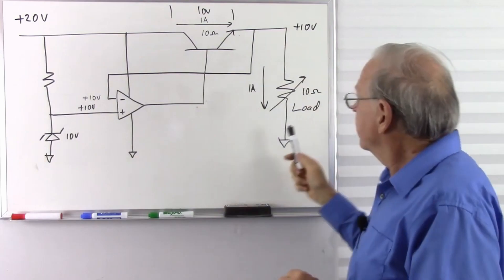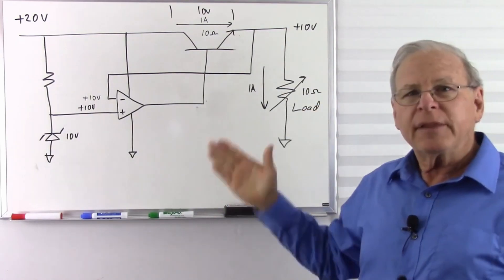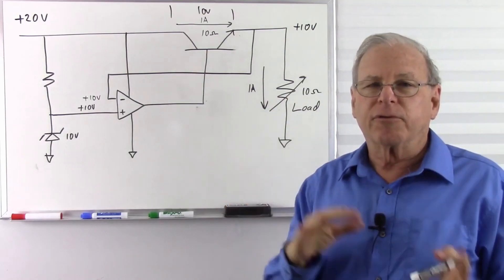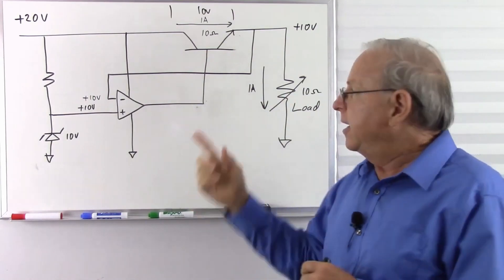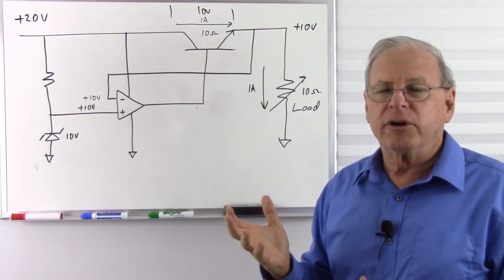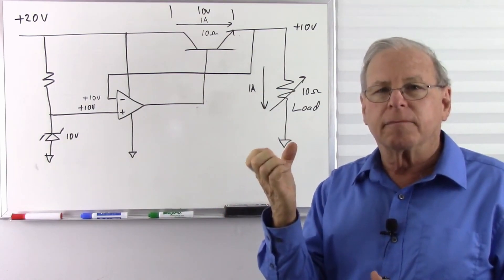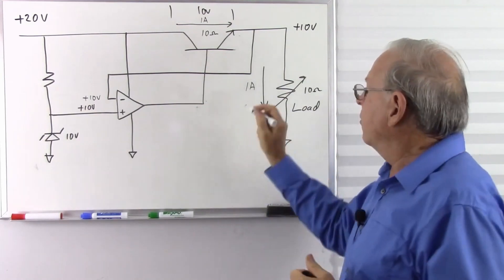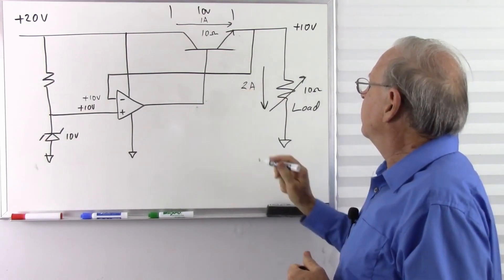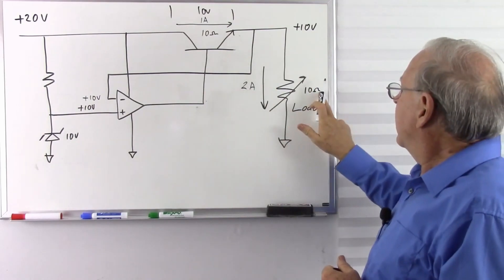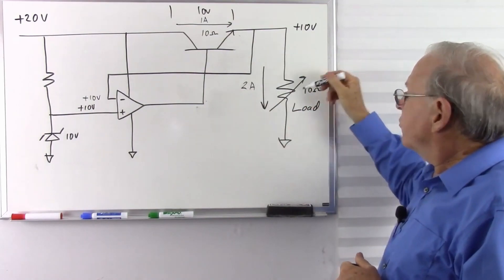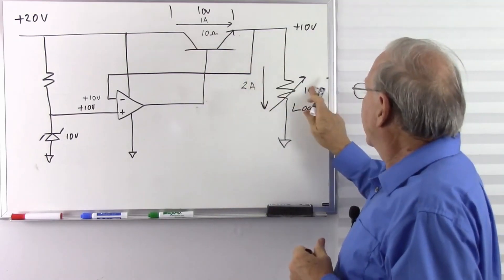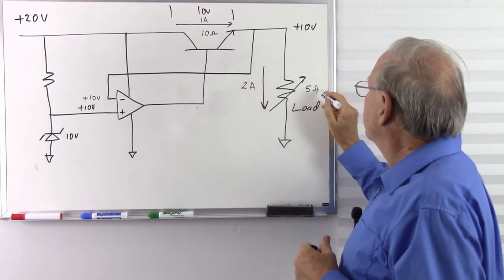Just to see how the controlling works, let's say that this is something like a transceiver. It's a radio that both receives and transmits. Right now it's in receive mode, so it's taking 1 amp. Now I'm going to go into transmit mode. I key the button on the microphone. That puts it in transmit mode. Now it needs more power. So let's say that jumps up to 2 amps. The current doubled. That means that the resistance that the load is presenting to the circuit has dropped to 5 ohms.